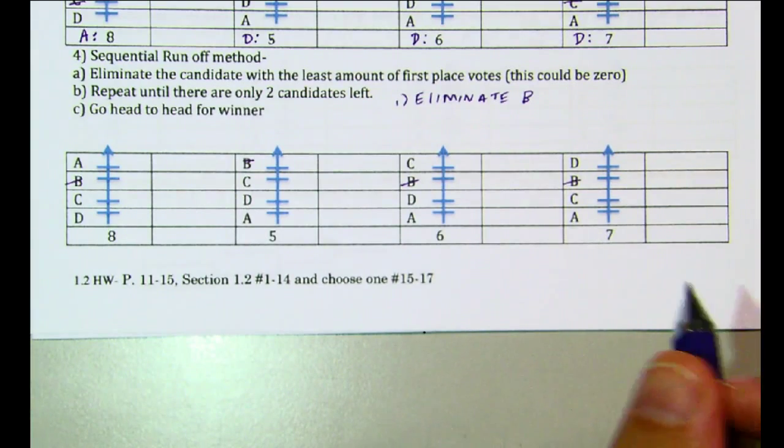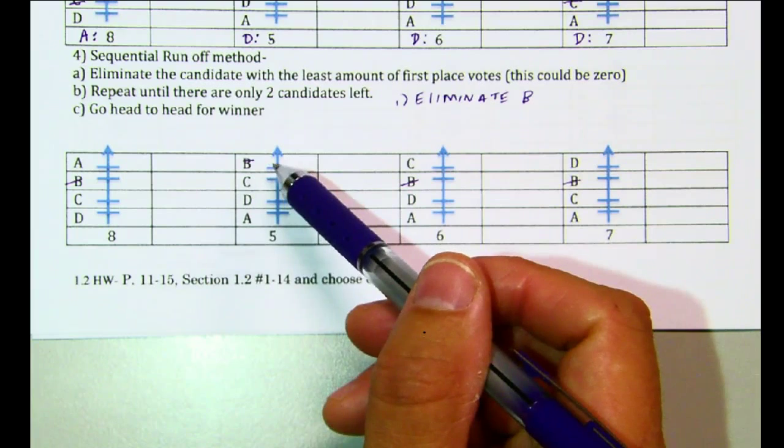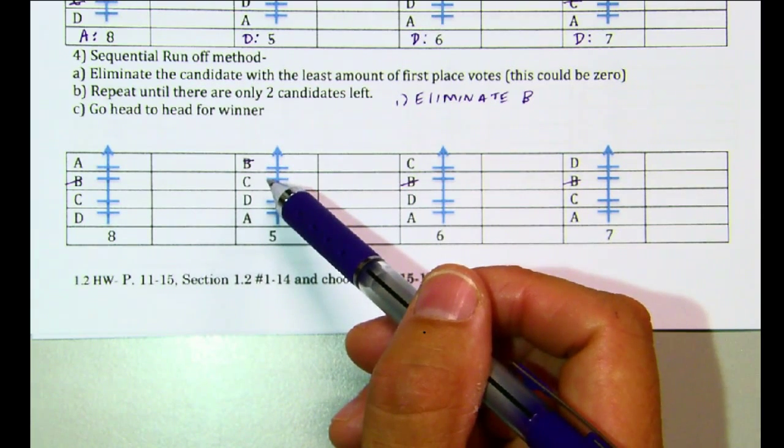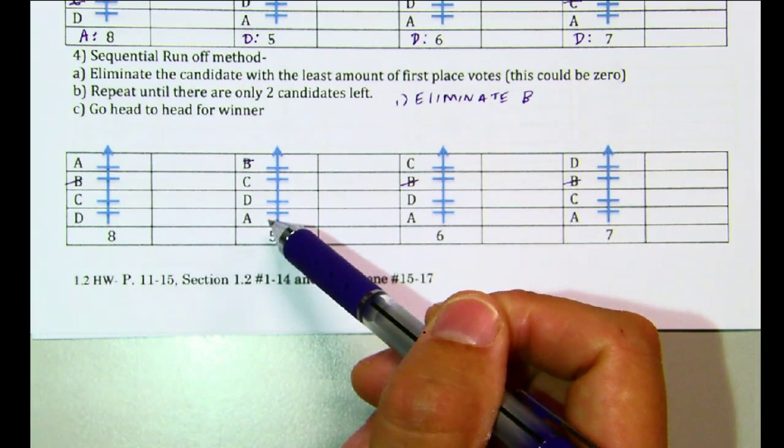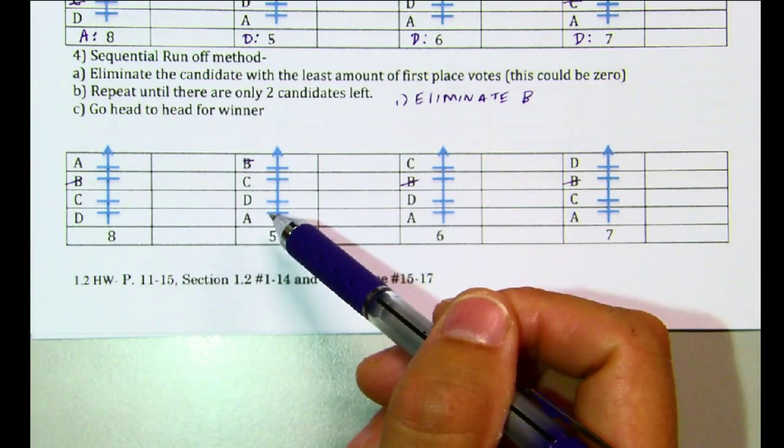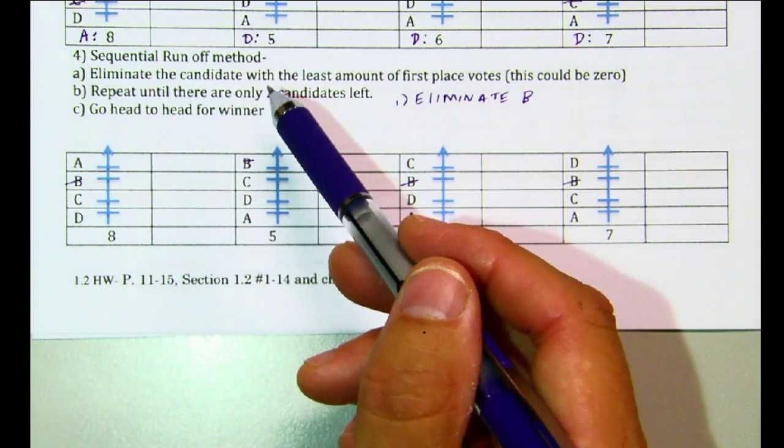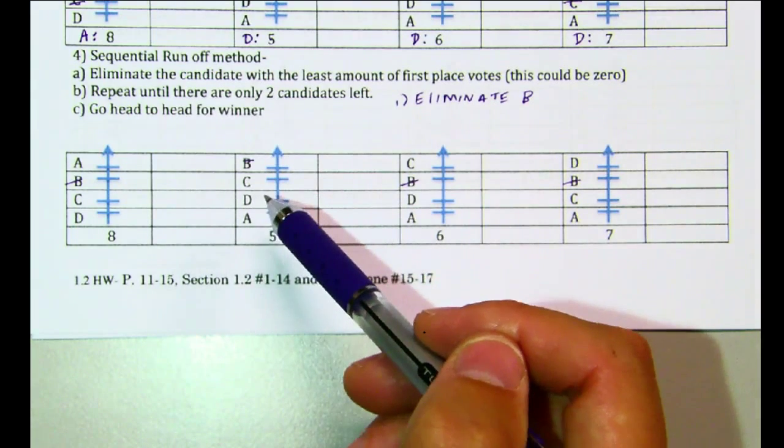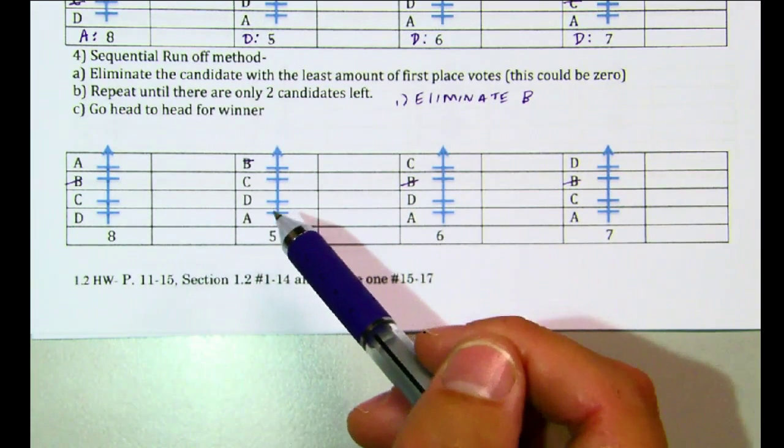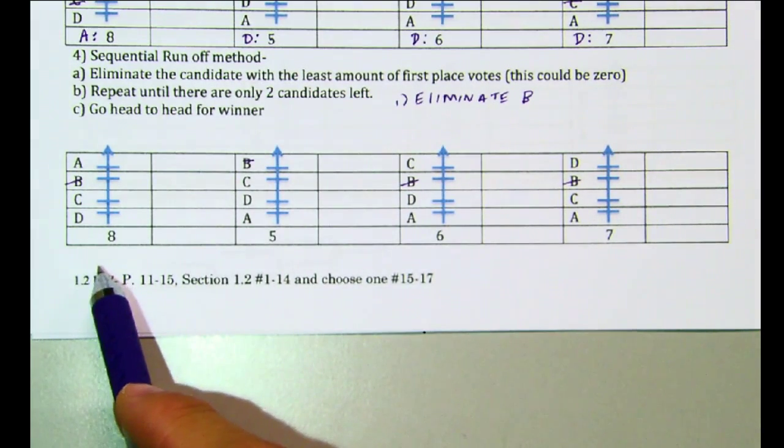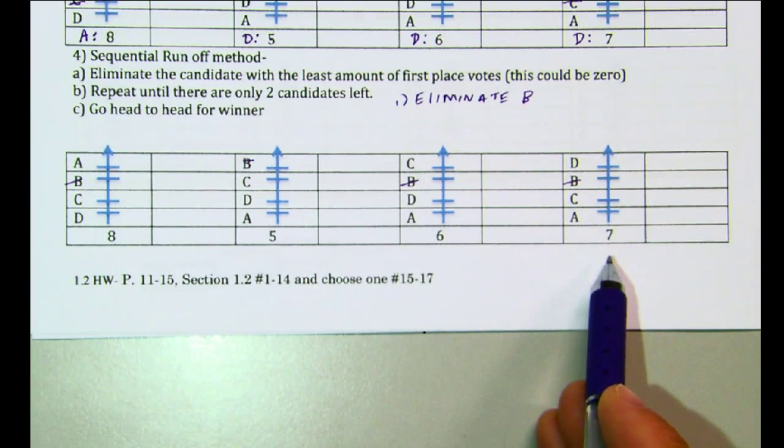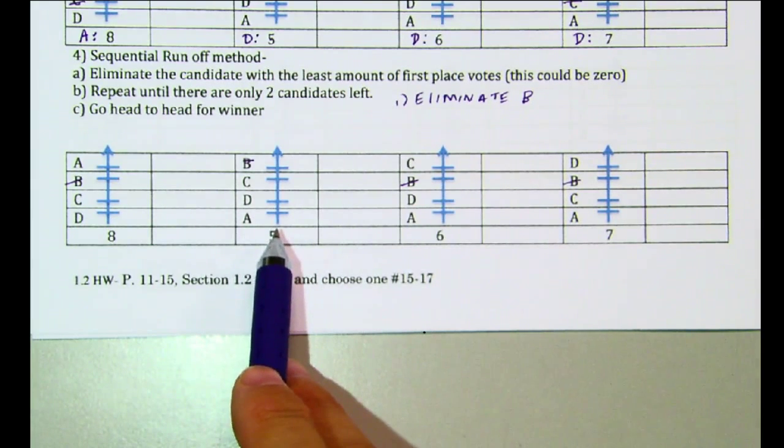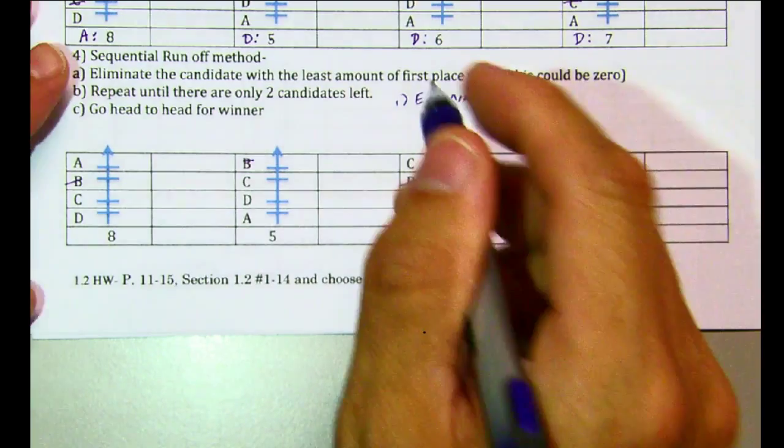Now, what happens, though, is that in this case where B was the top dog, well, who's the top dog now? Well, C is. So all of a sudden, in this new orientation, C is the first place vote getter right here. I hope that makes sense. So when I look to do this again, so this says repeat. So what I'm going to do is I'm going to eliminate the candidate that has the least amount of first place votes. Well, if I look at this, A has eight, C has five, C has six, so a total of 11, and D has seven. So what happens now is that D has the least amount of first place votes because I'm combining both of these for C.